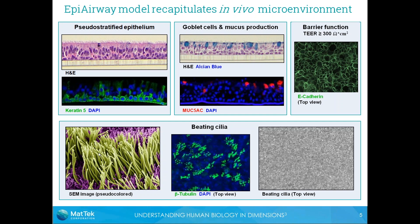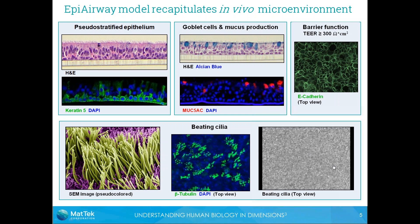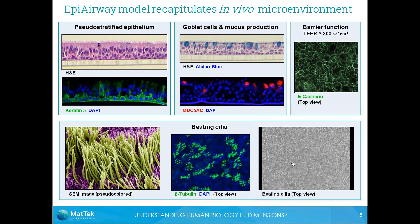These tissues also have actively beating cilia. You can see an SEM image of the cilia on the surface of the tissue, and beta-tubulin marking the ciliated cells. This video shows the beating cilia and mucus flowing across the surface of the tissue — you can see mucus particles flowing across, and the flickering is actually the beating cilia.